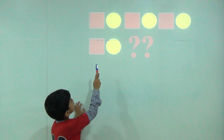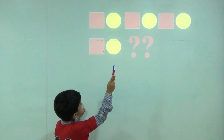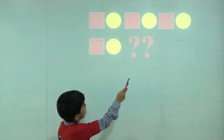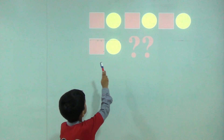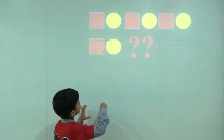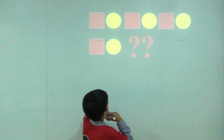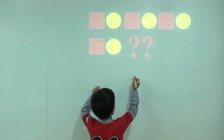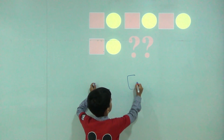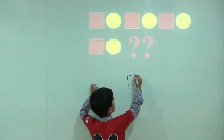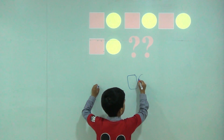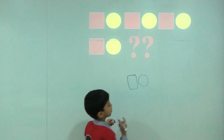Square, circle, square, circle, square, circle, square, circle. So here would be square and circle.